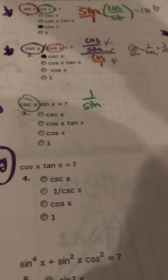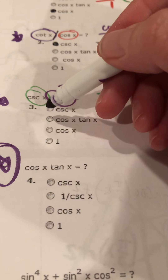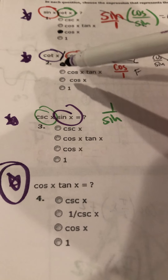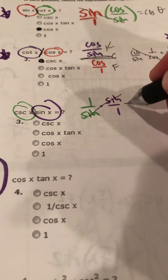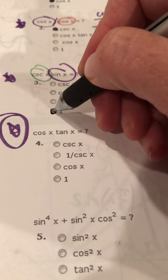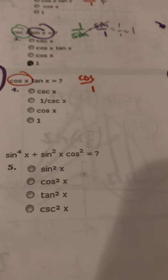Number 3: cosecant × sine. Cosecant is 1/sine, times sine/1 — the sines cancel and 1/1 = 1. Number 4 (the one you should have tried): cosine/1 × tangent, where tangent is sine/cosine. The cosines cancel, leaving sine. Sine is also 1/cosecant — that's a bit of a trick move.